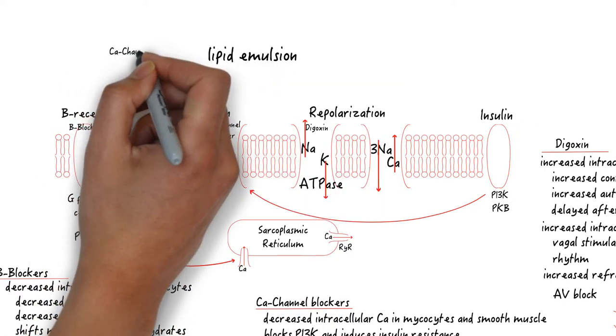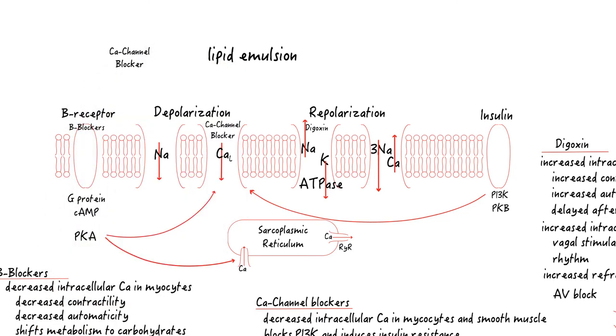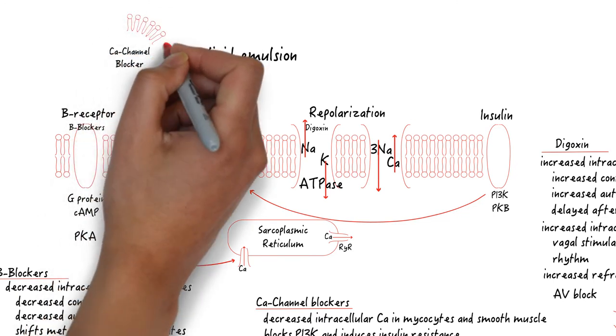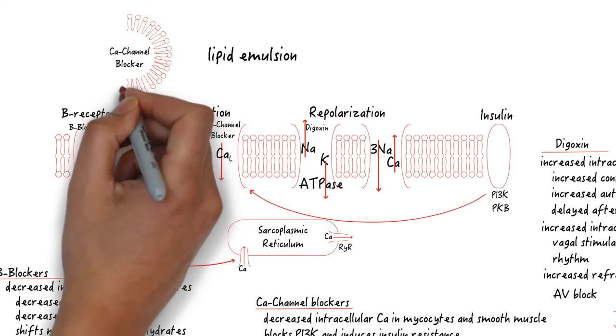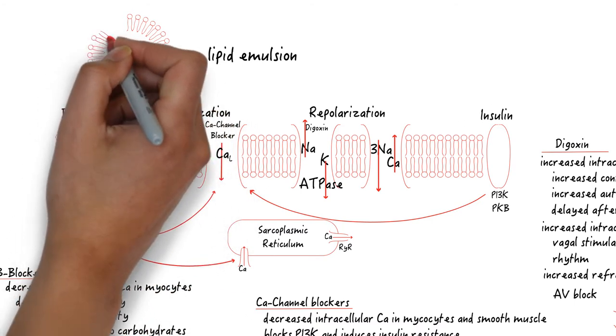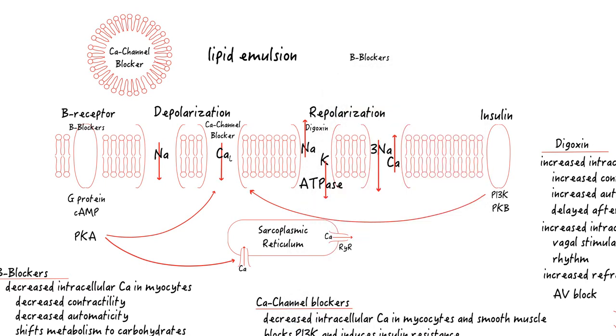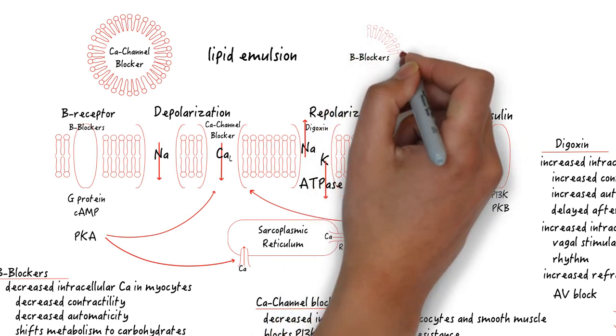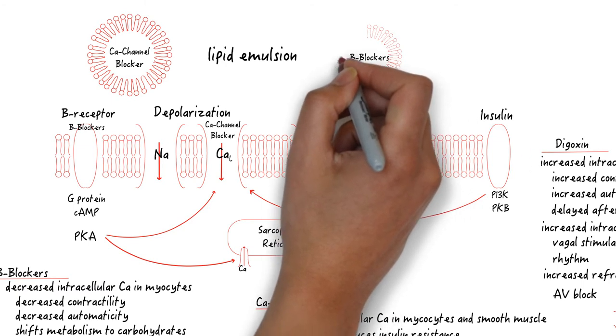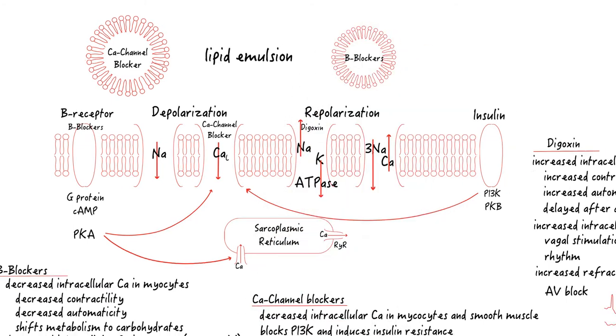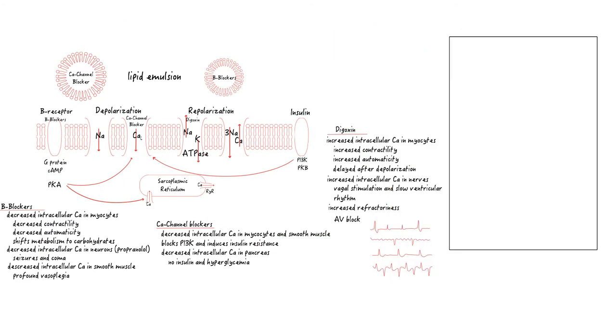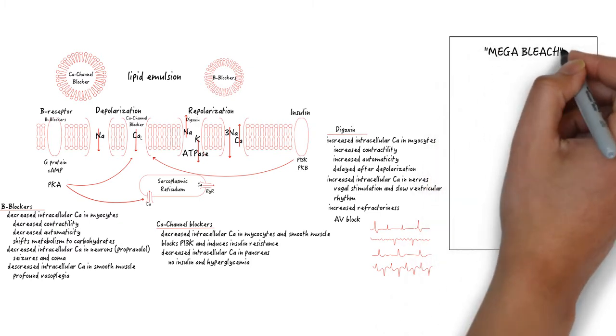Intralipid acts as a sink for lipid-soluble beta blocker and calcium channel blockers, decreasing the free molecules in the serum. It also shuttles toxins from the serum to the liver. Lastly, it can act as a source of fuel to the starved myocardium. The biggest downside to intralipid is that it impairs photometric lab testing once it's given. Remember the MEGABLEACHED mnemonic.